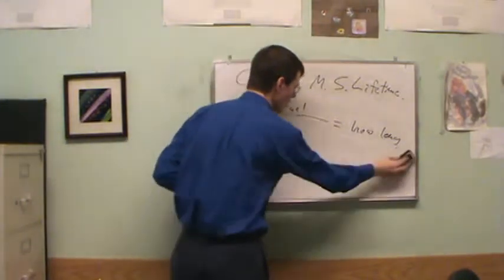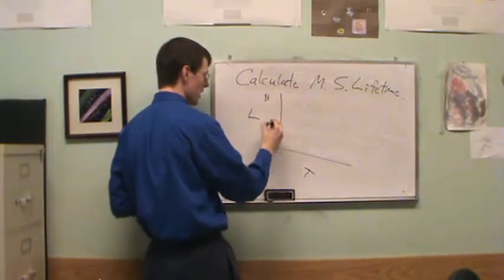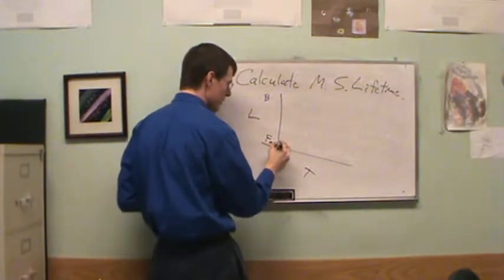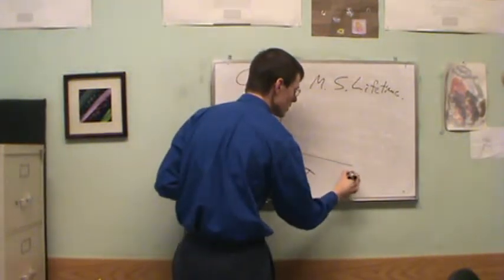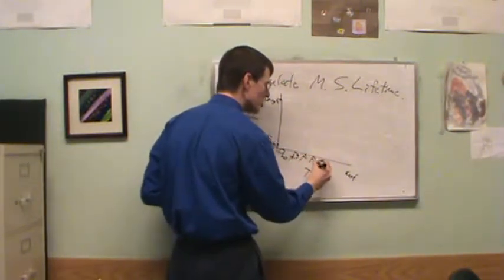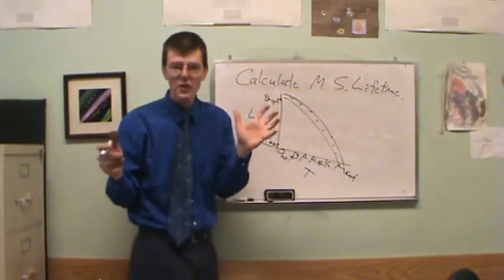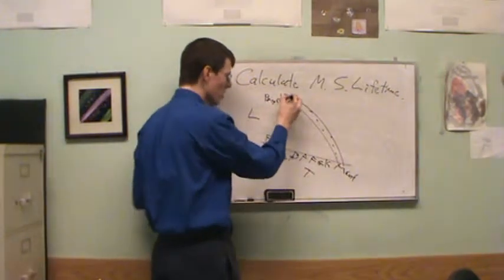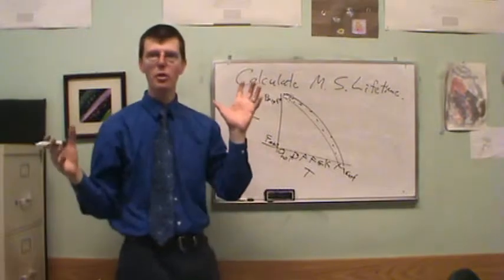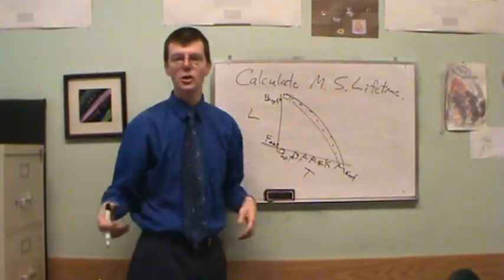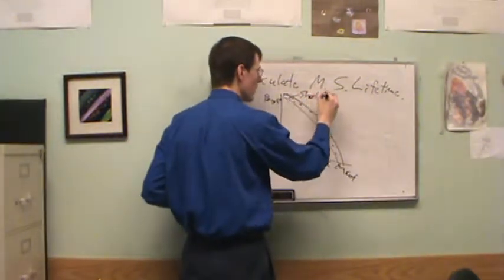We calculate main sequence lifetime by taking the total amount of mass available as fuel in the core, divided by the burning rate — which is determined by luminosity. On an HR diagram, the very high-mass stars, the hot O-stars — 100 times the mass of the Sun — are extremely luminous and burn through their fuel amazingly fast, lasting only a few million years.